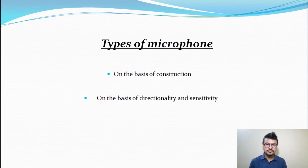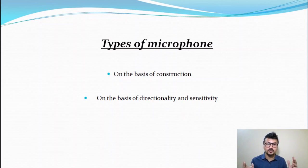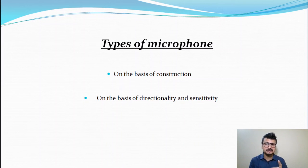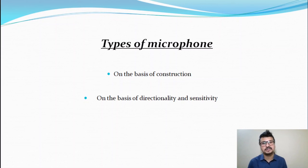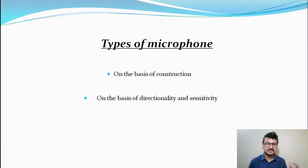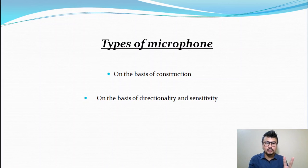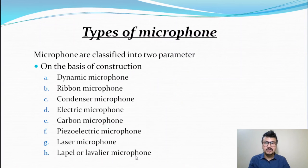We have types of microphones categorized on two bases: first, on the basis of construction — that is, how they are made — and second, on the basis of directionality and sensitivity — how they catch the voice and from which direction. All microphones are classified under these two major categories.